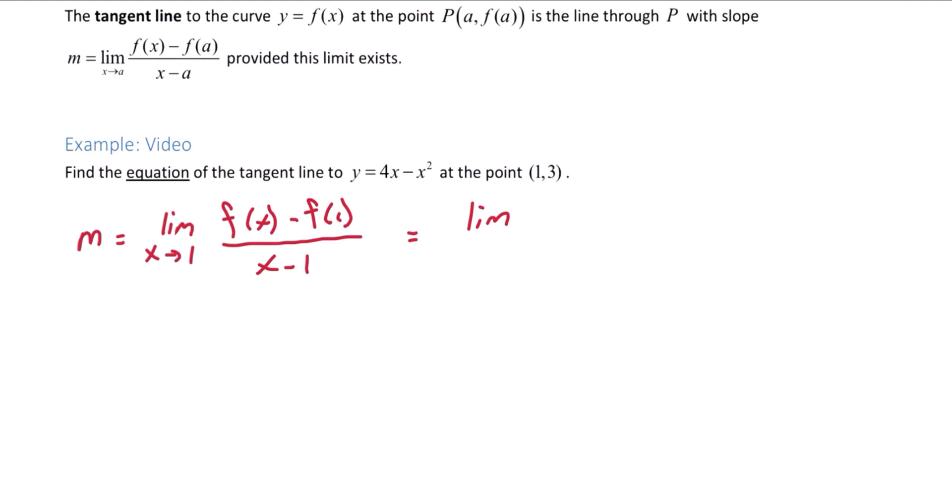So we have the limit as x approaches 1 of f of x minus f evaluated at 1. The function evaluated at 1 is 3 all over x minus 1.